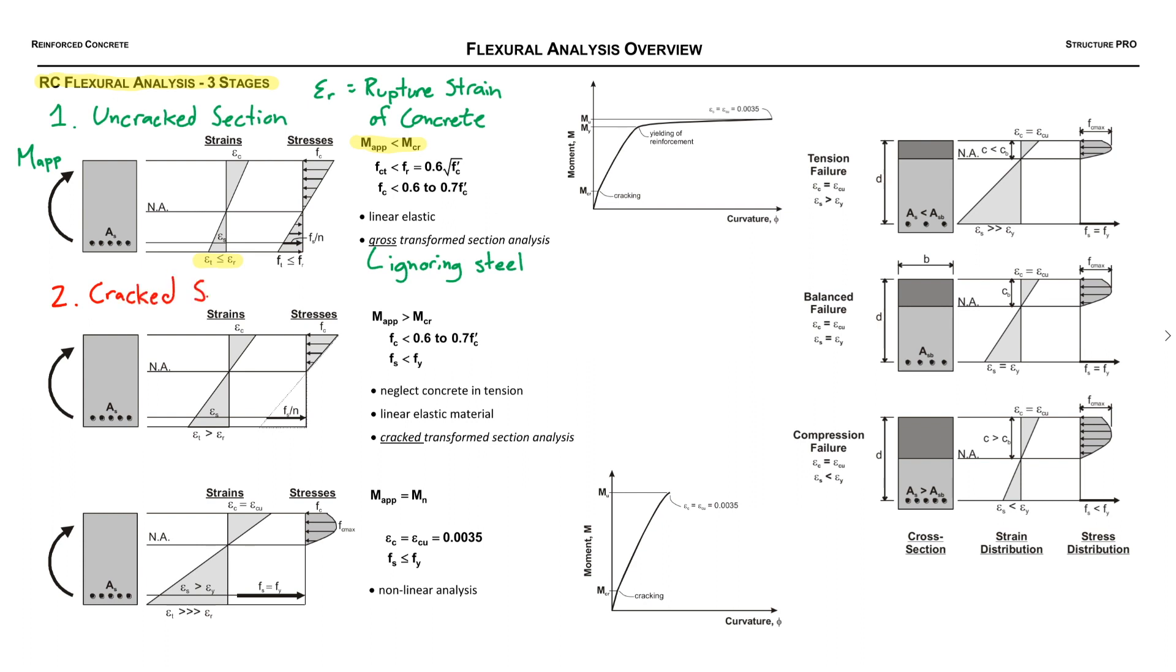Following this we have stage two or our cracked section, and in this stage the applied moment, we'll label the M_applied on the left side here, it is greater than the cracking moment. Okay, simple enough. So as a consequence we now have linear elastic material still for the concrete and the steel, but we have to neglect the concrete that's in tension. So the concrete that's in compression is linear elastic, the concrete that's in tension we just neglect it all together, and now epsilon_T is greater than epsilon_R, okay makes sense.